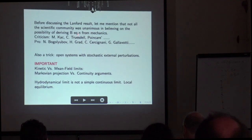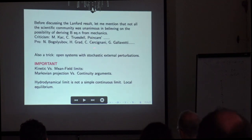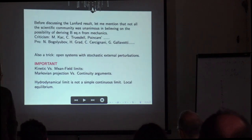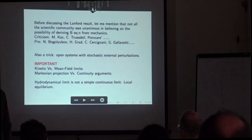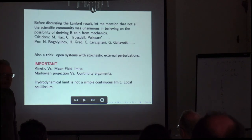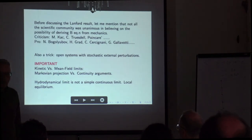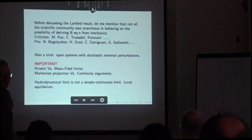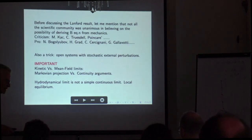Kac was against Truesdell and Poincaré. On the other hand, Bogoliubov, Harold Grad, and Italians like Carlo Cercignani and Gallavotti — who gave the first rigorous proof of the Boltzmann equation for the linear case, a given particle in a random distribution of obstacles — were in favor. Curiously this paper was unpublished for a long time, but it was later published in a book and is now well known.